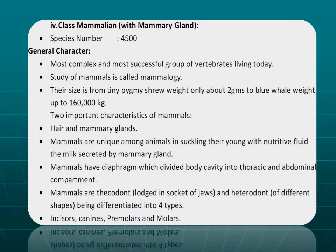A third unique character of mammals is being heterodont or thecodont — meaning mammals have different shapes of teeth that are fixed or locked in sockets of the jaws. The different tooth shapes have different functions: incisors for biting, canines for cutting, premolars for grinding, and molars for more grinding and mastication. Mammals also have a diaphragm which divides the body cavity into thoracic and abdominal cavities.